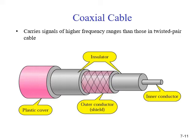Coaxial cables are categorized by the Radio Government RG rating. Each RG number denotes a unique set of physical specifications, including the wire gauge of the inner conductor, the thickness and type of inner insulator, the construction of the shield, and the size and type of the outer casing. Each cable defined by an RG rating is adopted for a specialized function.